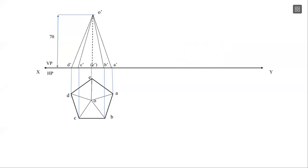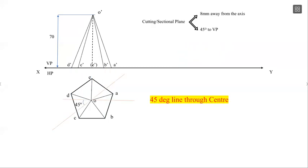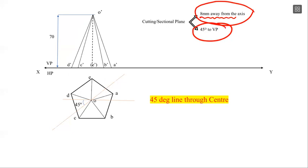What do we do with the sectional plane data? We have a cutting plane at 45 degrees to VP and 8mm away from the axis. The sectional plane appears as a line in the top view. The distance of 8mm lies away from the center point.